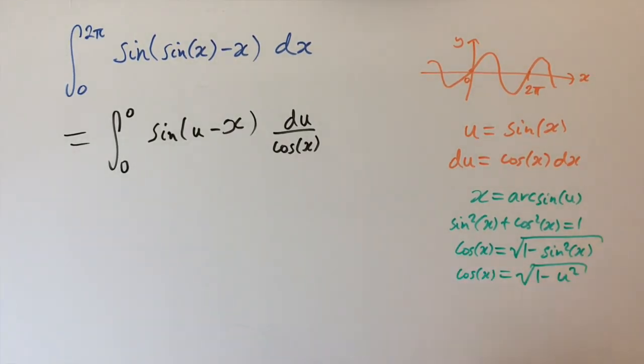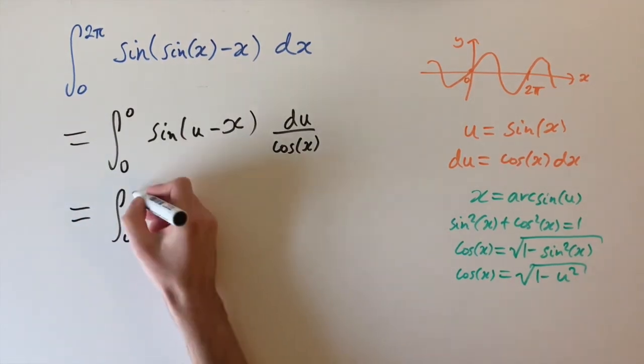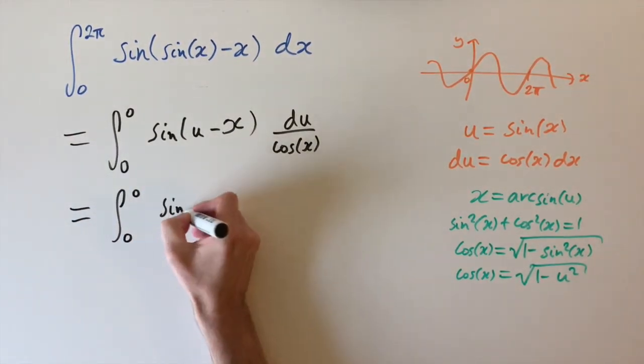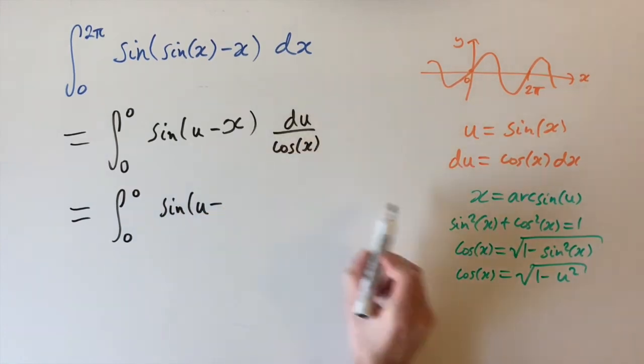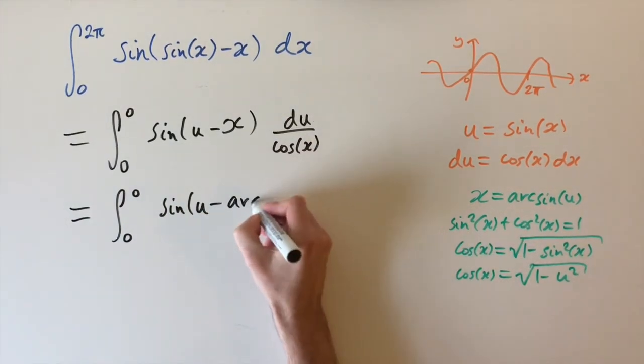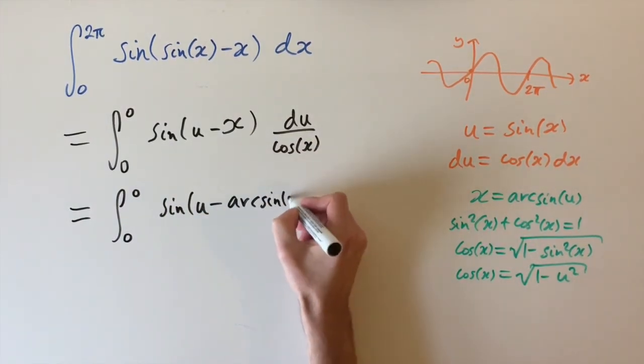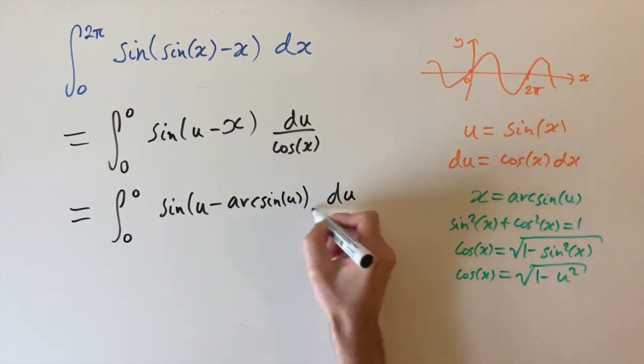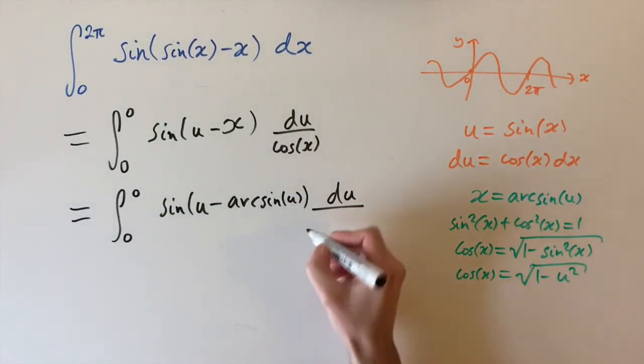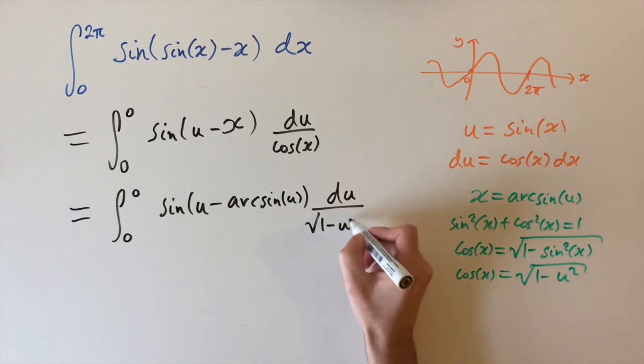So let's just substitute all this in. We have the integral between 0 and 0 of sin(u - arcsin(u)). And then we multiply by du divided by cos(x), which is √(1 - u²).